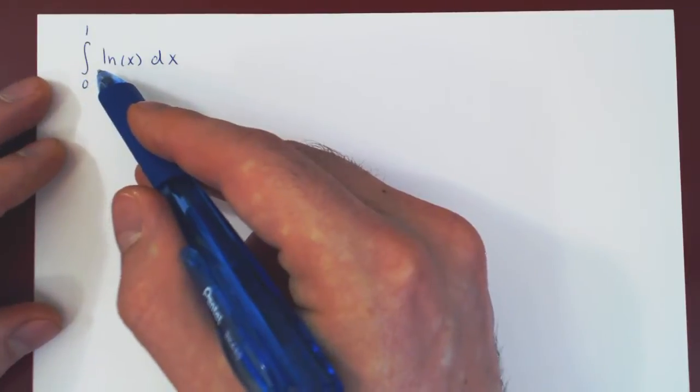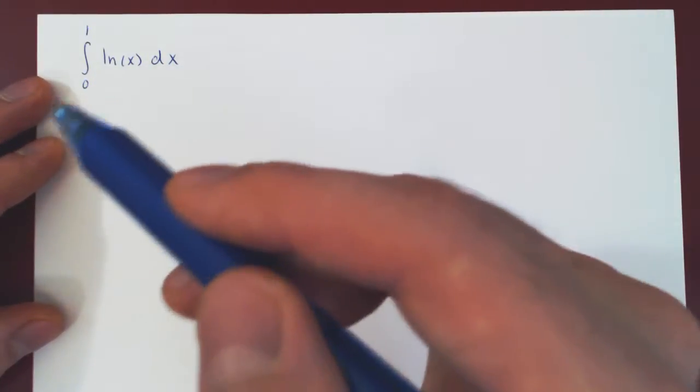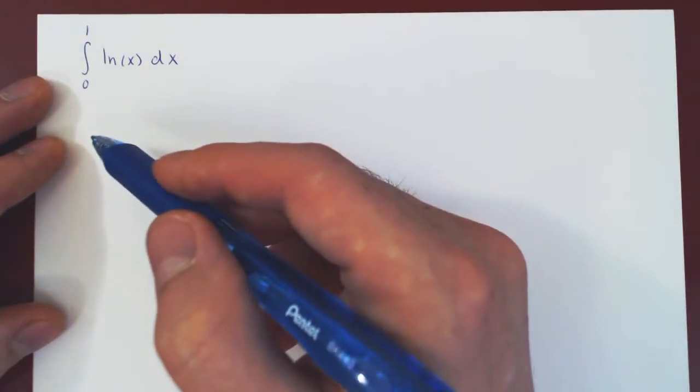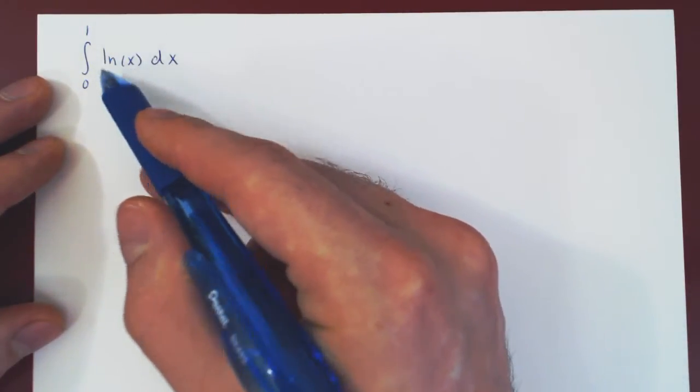So our function, in this case ln of x, must have at least one discontinuity between 0 and 1. Well to see this let's sketch the graph of ln of x.